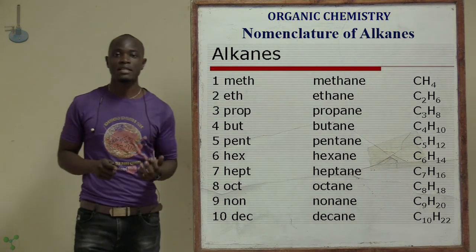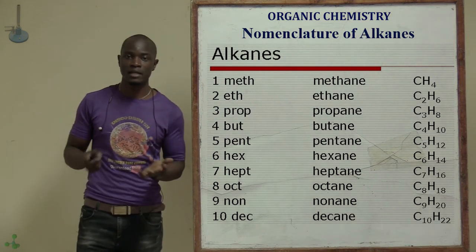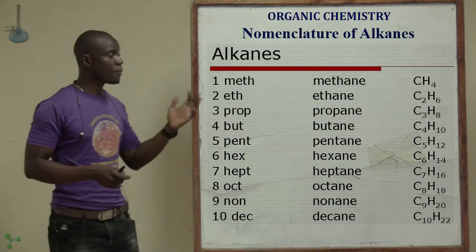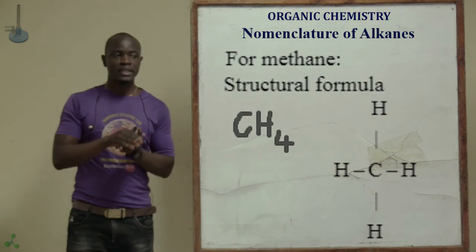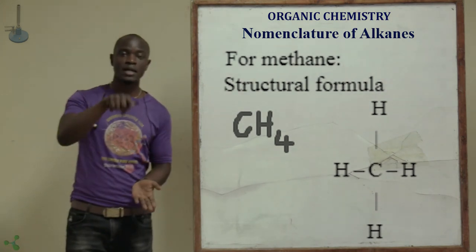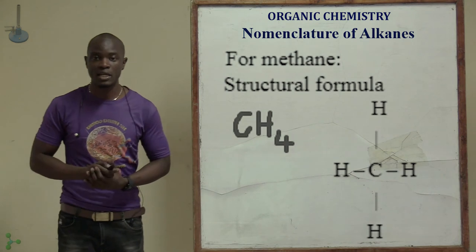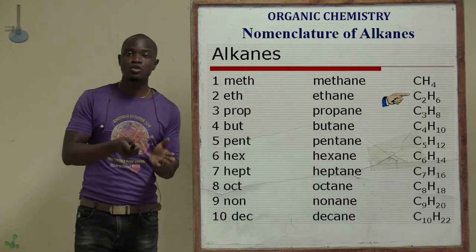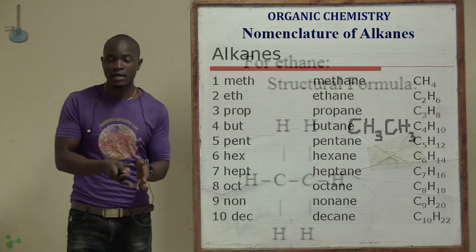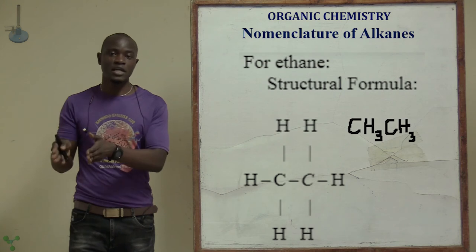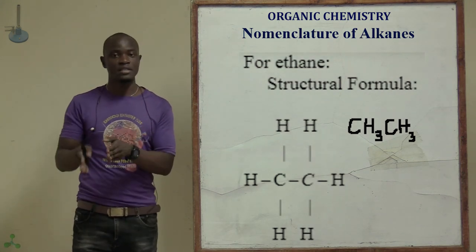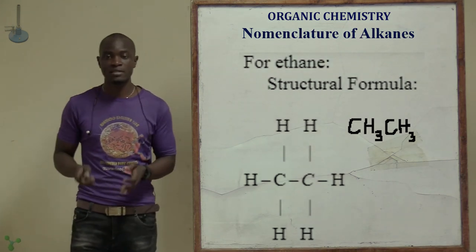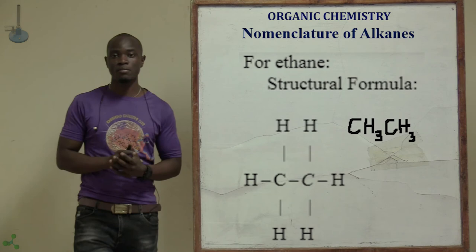For example, the molecular formula for methane is CH4. For ethane, the molecular formula is C2H6, the closed structural formula is CH3CH3, and for the open structural formula, you show the position of hydrogen atoms on each respective carbon atom.